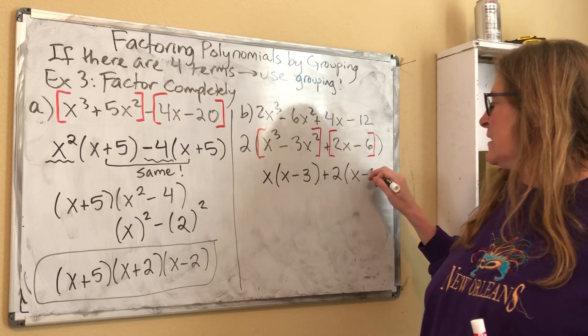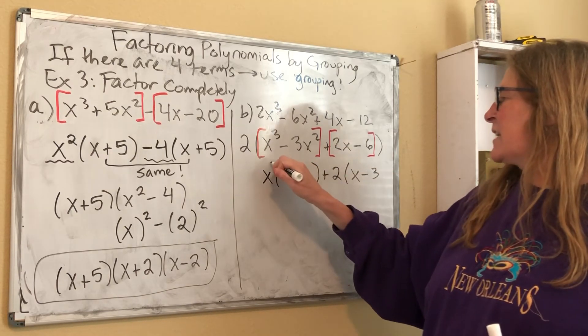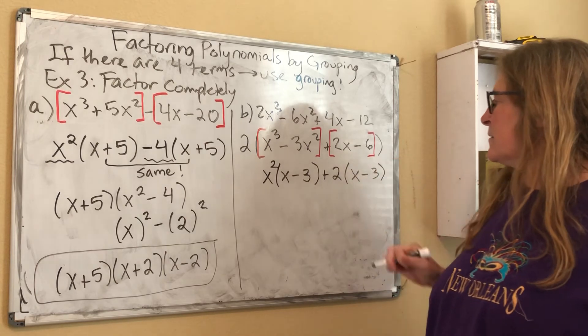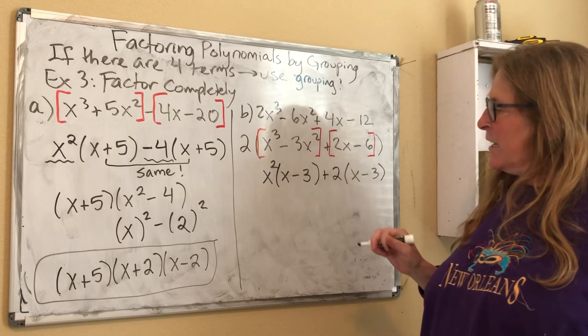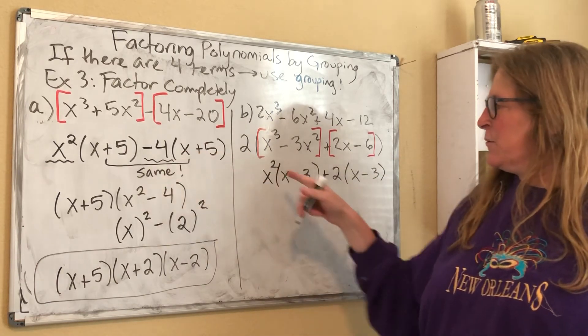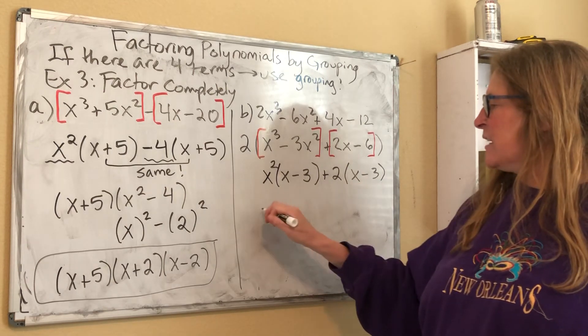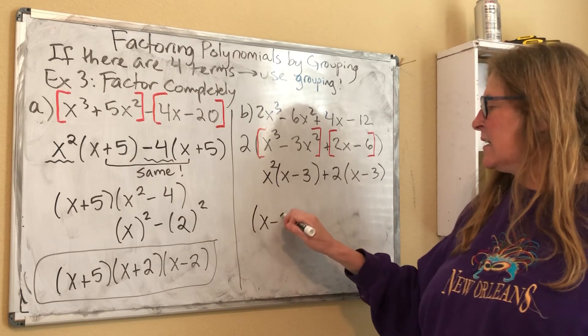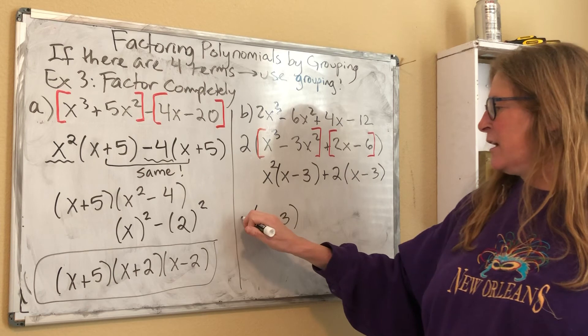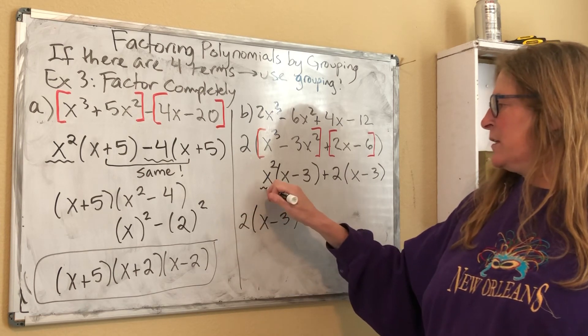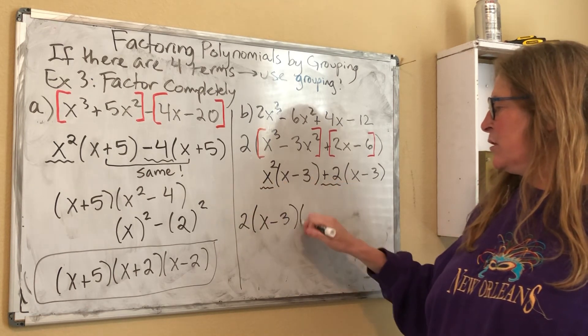Oh, we did it. Sorry, this should be an x squared. Okay guys, so now we're going to do the same thing we did here. We're going to factor out the x minus three. And don't forget that two out front. And we will be left with x squared plus two.